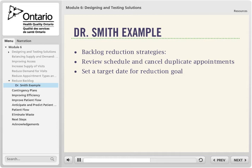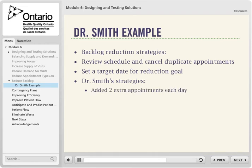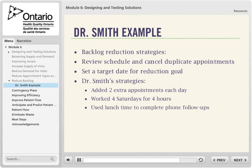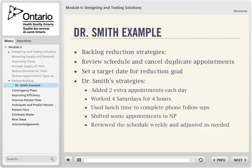Dr. Smith set a target date for his backlog reduction plan and chose the month of December and Christmas holidays as a quieter time. He added two extra appointments each day in the morning and worked four Saturdays for four hours to catch up. He used his lunchtime to complete telephone follow-ups and shifted some appointments to his NP. Over the month of December, Dr. Smith and his receptionist met weekly to review the future schedule and adjust it as needed.